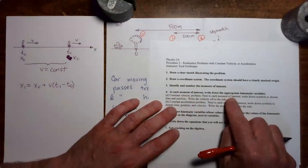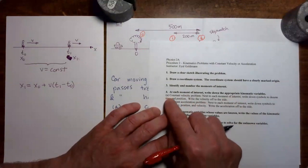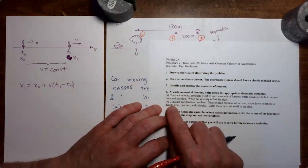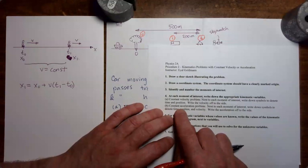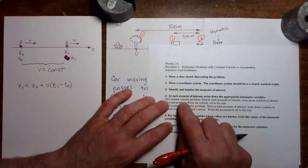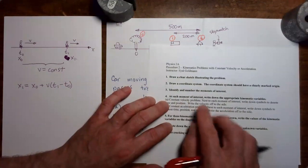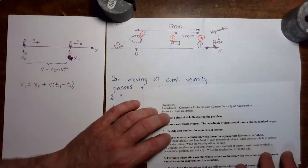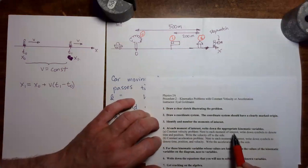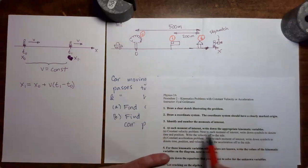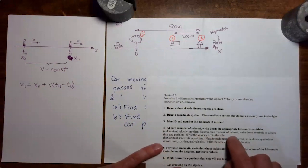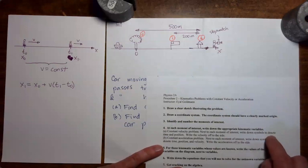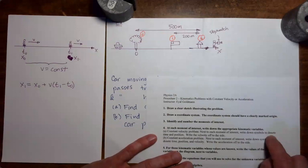Step four: at each moment of interest, write down the appropriate kinematic variables. We have option A, a constant velocity problem, and option B, a constant acceleration problem. Since acceleration hasn't been introduced yet, and the car is moving at constant velocity, this is a constant velocity problem. For a constant velocity problem, next to each moment of interest, write symbols for time and position, and write the velocity off to the side.